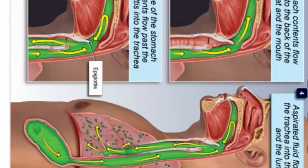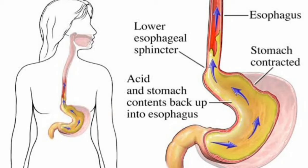Regurgitation is a passive process that may occur at any time and is often silent. It may have clinical effects ranging from minor pulmonary sequelae to fulminating aspiration pneumonitis and ARDS. The most important determining factors for regurgitation are lower esophageal sphincter function and residual gastric volume, which itself is largely determined by the duration of fasting and the rate of gastric emptying.